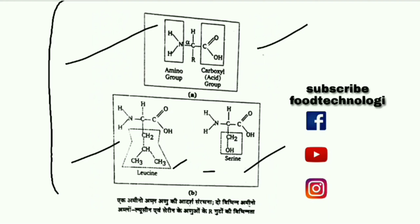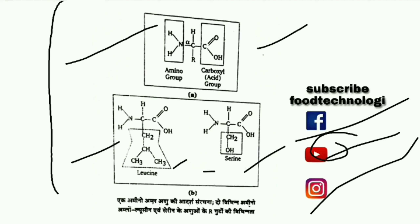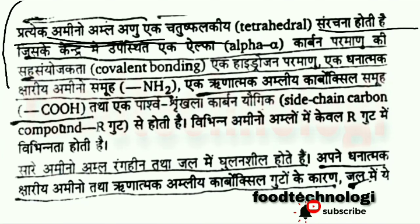Each amino acid has an alpha carbon, with one hydrogen, one amino group, one carboxyl group, and a variable side chain. The side chain carbon compound differs across the various amino acids, giving them their distinct properties.